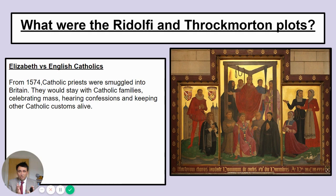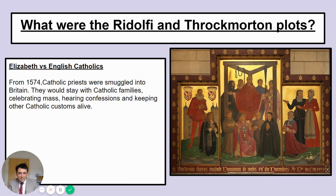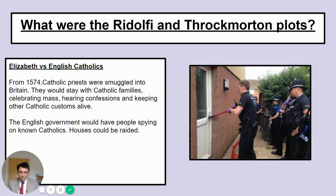Now we're seeing a struggle between Elizabeth and the Catholics. At the start of this topic, Elizabeth had been fairly patient with Catholics, allowing some Catholic practices in the religious settlement — things like crucifixes and colourful robes — and had said if Catholics, or recusants, did not go to church services, don't punish them too harshly. But we're seeing her be more harsh now. From 1574, Catholic priests were smuggled into Britain. They would come from other countries by boat, staying with Catholic families celebrating mass, hearing confessions and keeping the Catholic religion alive in secret. The English government was spying on Catholics and houses could be raided at any time.